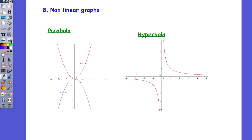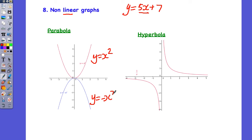The last thing to look at today is non-linear graphs. A linear equation — you can see the word 'line' in that — like y equals 5x plus 7, where x has a coefficient but no powers, gives a straight line. When x is squared, like y equals x squared, or y equals negative x squared, which is a reflection, those are non-linear. And y equals 1 on x is also non-linear. The parabola and hyperbola are examples of non-linear graphs. What we've been looking at most in this chapter is linear equations. I hope this helps — go back and review these for your exam.